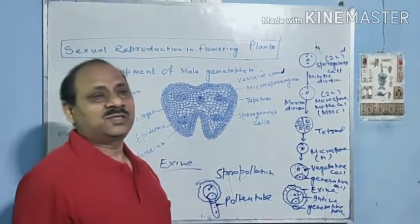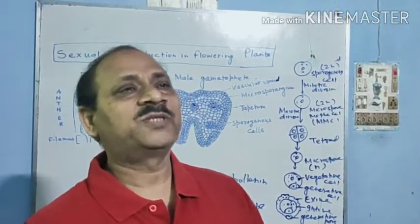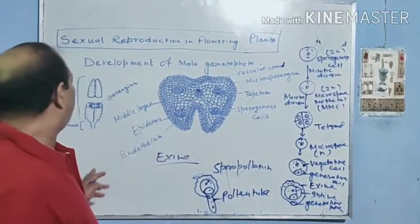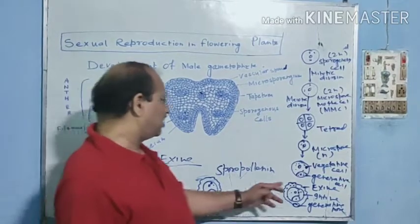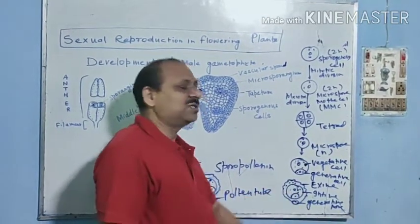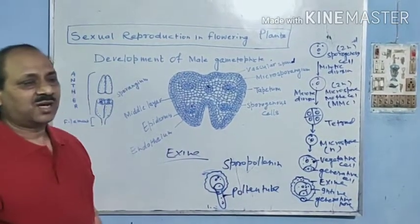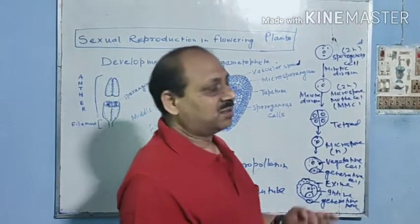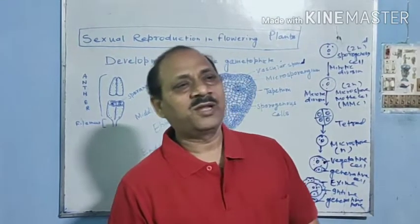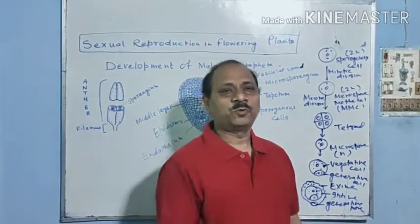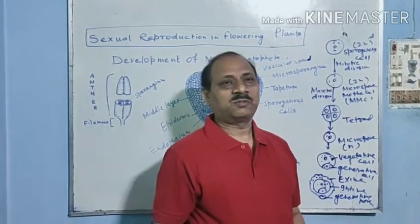Pollen germination takes place when the pollen falls on the stigma of the pistil. Now the development of the male gametophyte is finished. This two-cell condition is known as the male gametophyte. In the next class I shall discuss the development of the female gametophyte. If you like this class or video, please subscribe. Thank you.